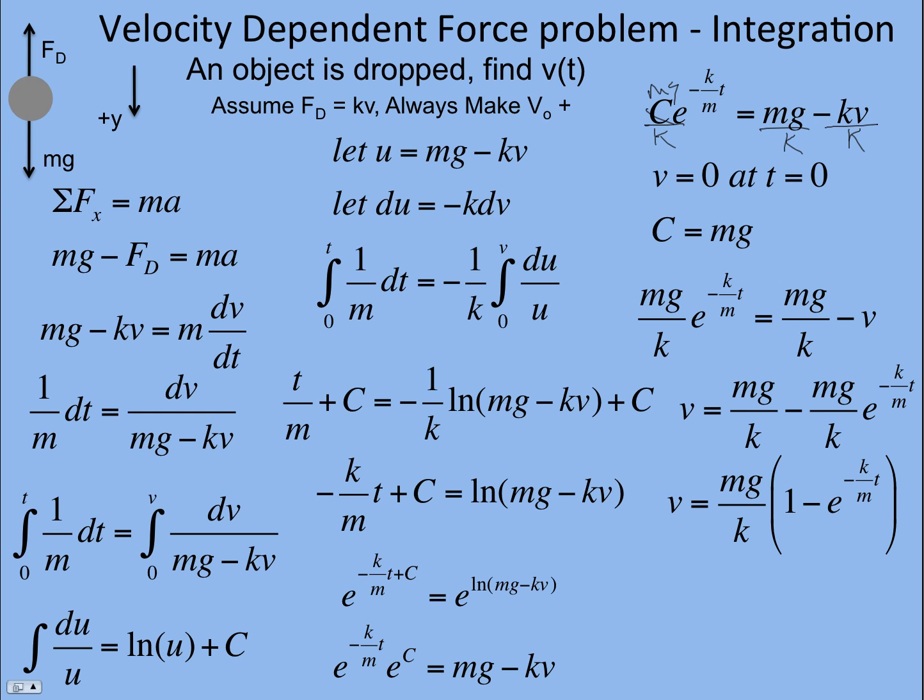And this is the answer I showed in class today. It makes sense. If we put in t equals 0, then I get this term becomes 1. That's a big 0 there. And so 1 minus 1 is 0. The velocity starts out at 0.